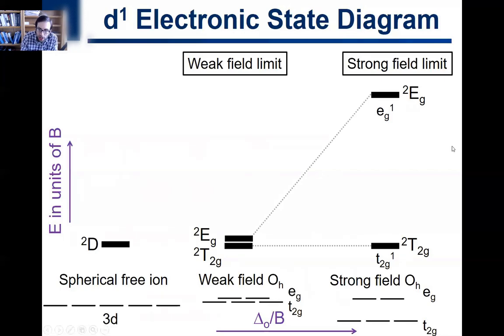So you have a doublet D free ion term for the spherical ion, which splits into the doublet EG and doublet T2G in the weak field. In the strong field, the doublet T2G stays at the baseline while the doublet EG goes up with a slope of 1 delta O. There's one spin-allowed transition.